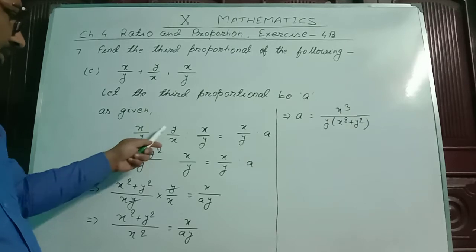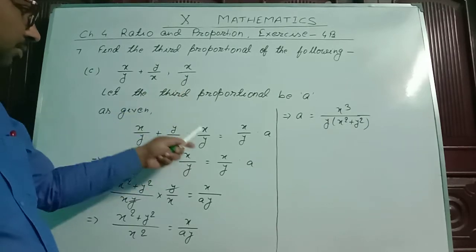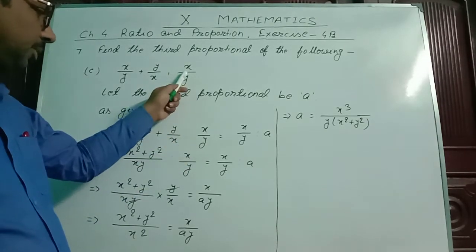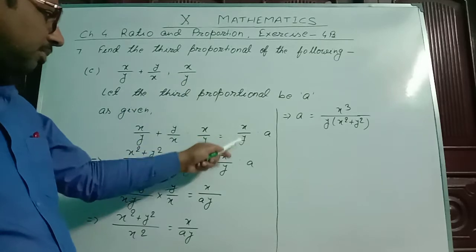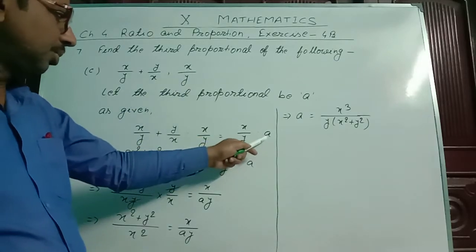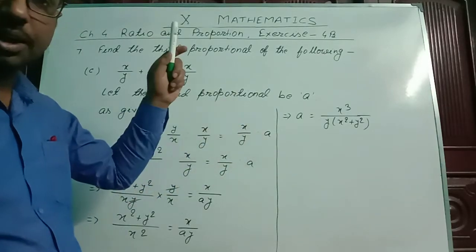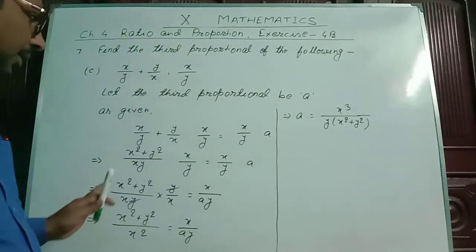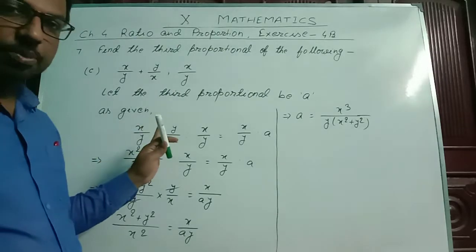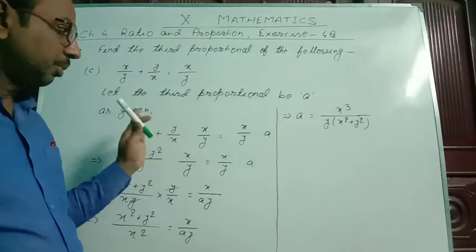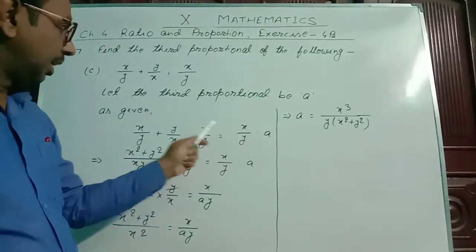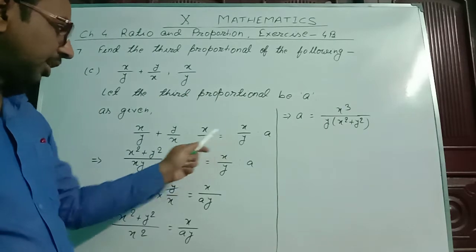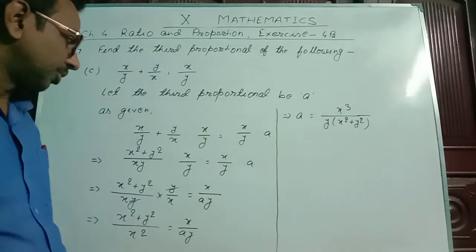So, x/y + y/x : x/y = x/y : a, in the continued proportion. This is the place of the third proportional a. This term will be repeated — x/y is repeated on both sides.